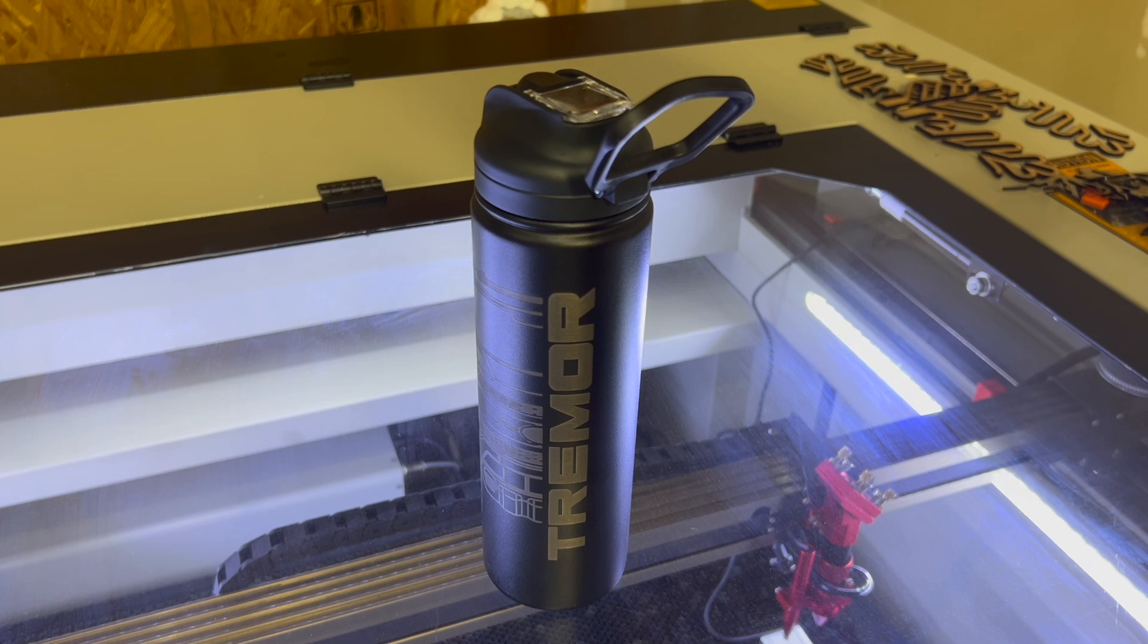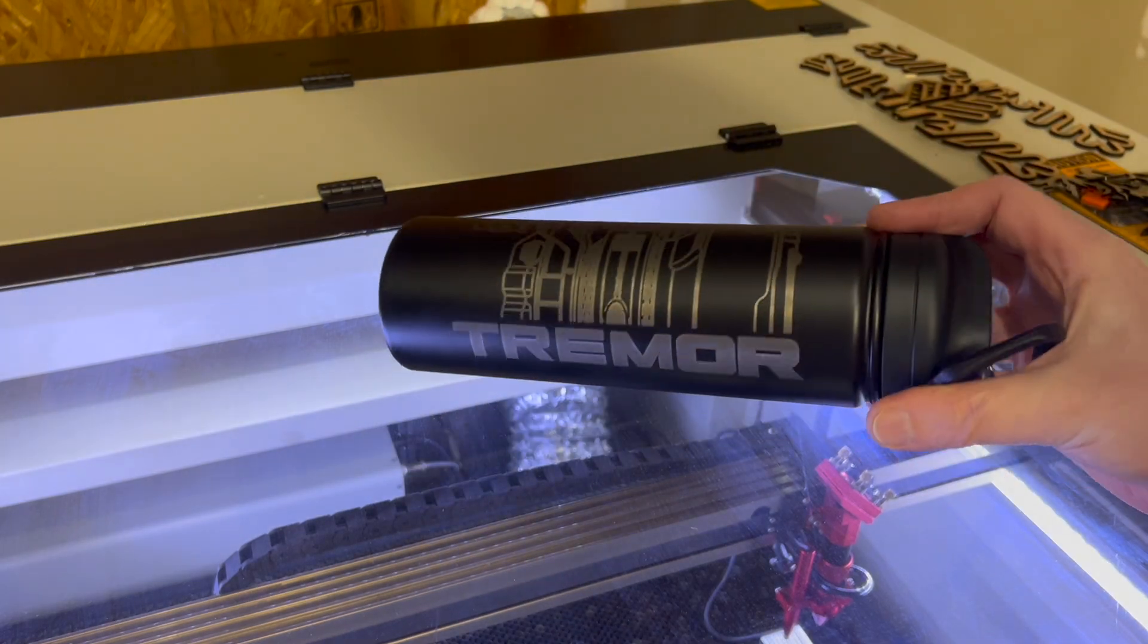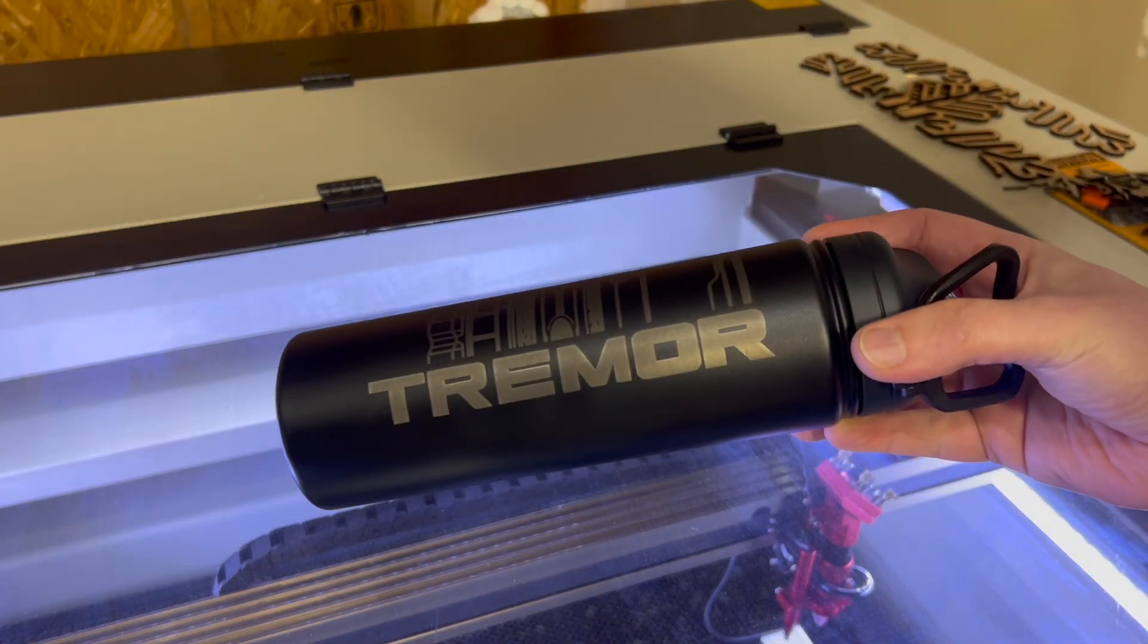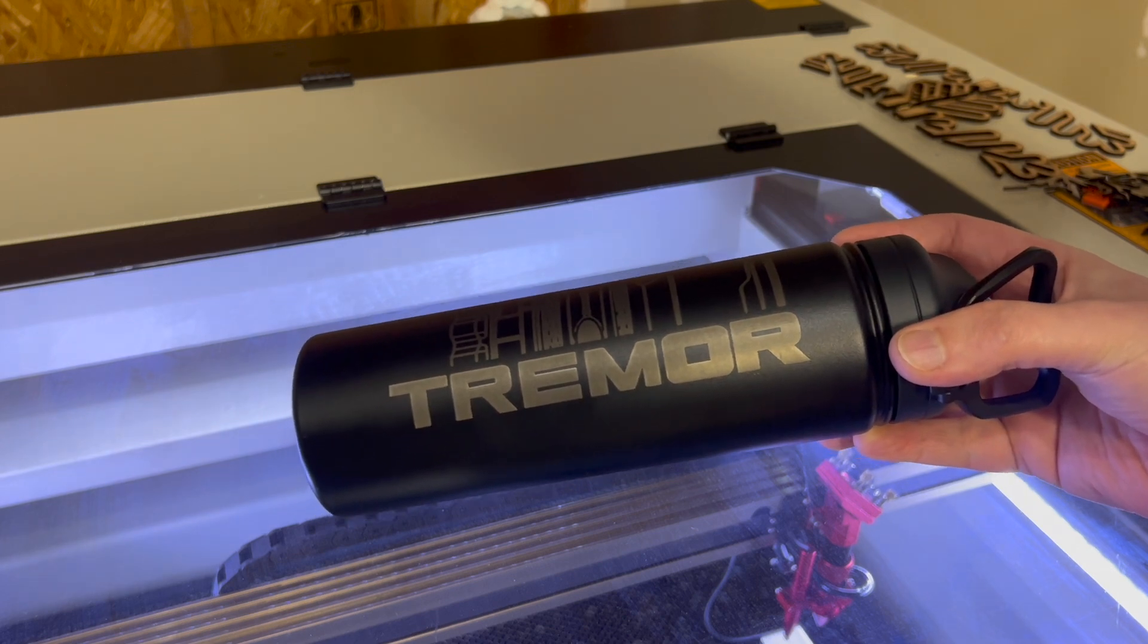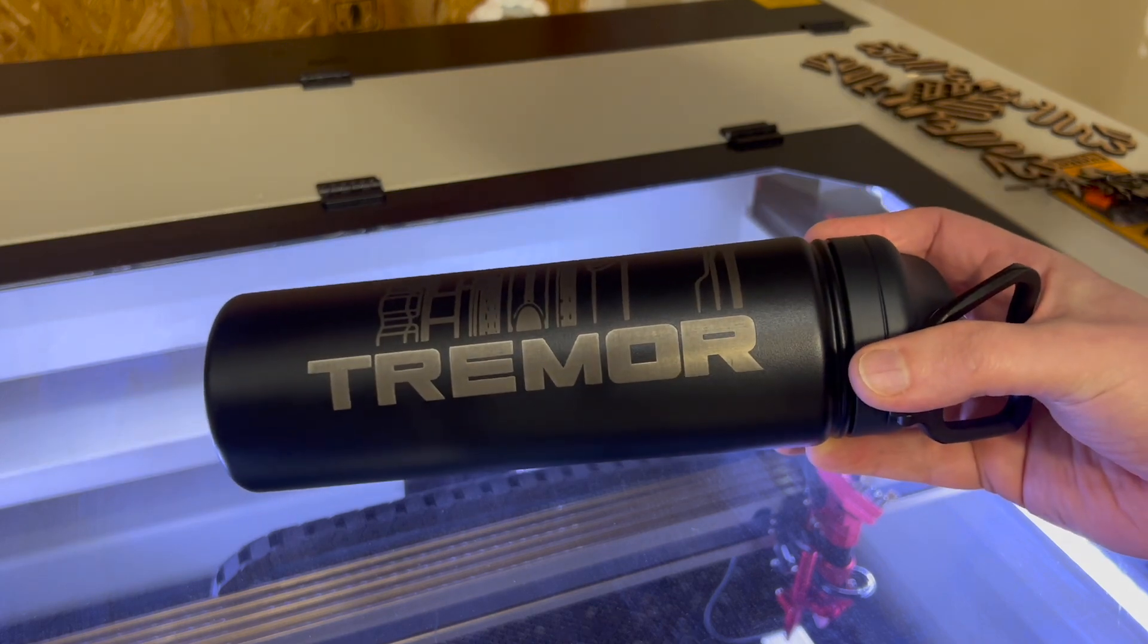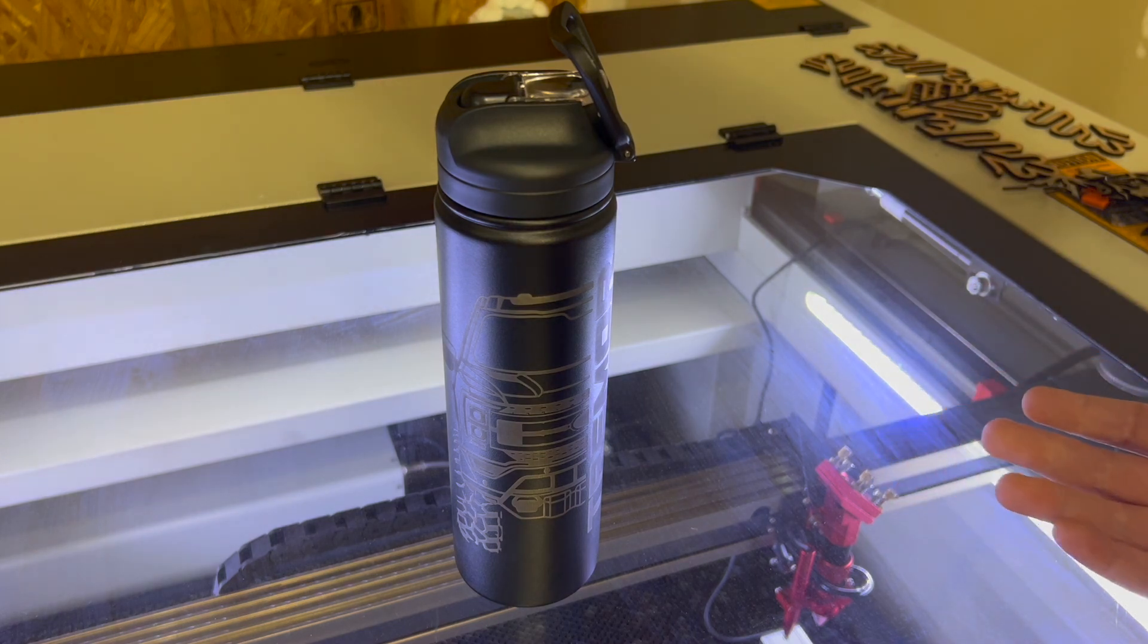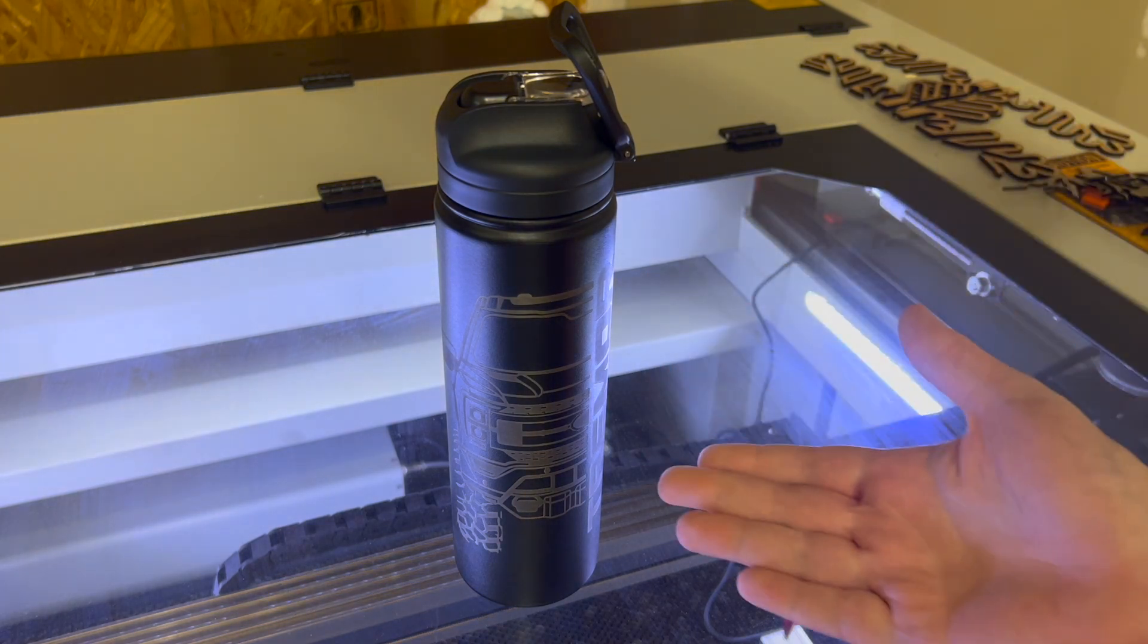The tumbler was 10 bucks. I'll probably charge anywhere from 25 to 40 dollars depending on the size and to get something completely custom that you will never find anywhere in any store. So you do drive a Tremor which is kind of a limited edition truck if you will, and you're just not going to find anything like this on the market. And what's cool about the laser, of course, if you're watching this video you already know, you can put any design you want on this thing.